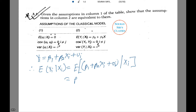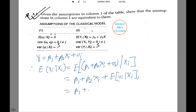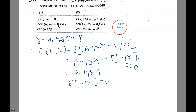Therefore, E(yi | Xi) equals E(beta1 plus beta2 Xi plus ui | Xi). Since the betas are constant and X is non-stochastic, this equals beta1 plus beta2 Xi plus E(ui | Xi). Since E(ui | Xi) equals zero by assumption, hence we have derived the first result.